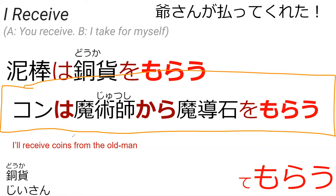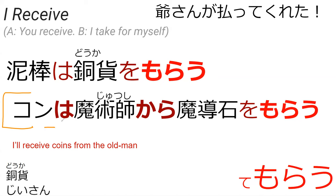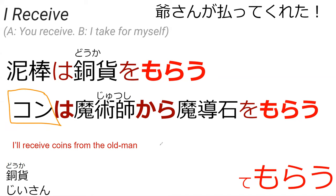Can you read the sentence for me? Khan wa majutsu-shi kara madouseki wo morau — perfect. What does this mean? Khan took the magical stone from the magician. It can mean that. Since this is written in the third person, it's probably just receive. If instead it said ore, then it would be I have taken it for myself. So that's the big thing to notice — is it I or a third person? Khan is the main character, so if Khan's talking and he uses morau, it is definitely going to be I receive.